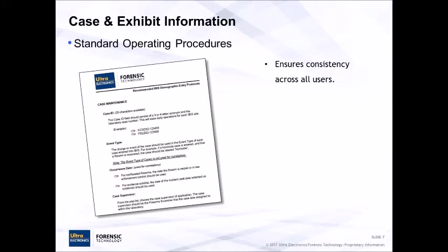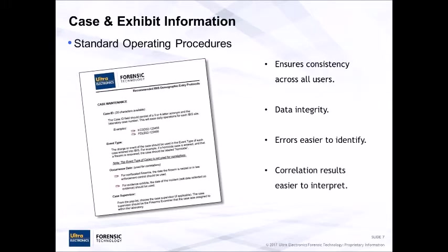Even if there are just a few BrasTrax users in the lab, it's better if there is consistency between all of them. Having a document, like the one pictured, that sits next to the BrasTrax acquisition station means that if someone hasn't used BrasTrax in a while, they can step through the document and the integrity of the data being entered is still good. If everyone is using the same format, it makes it easier to spot errors on the match point. It can also make correlation requests easier to interpret if things like the year or codes representing crimes or regions are included in the case or exhibit number.